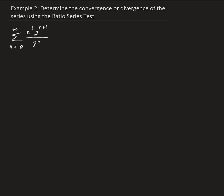If the limit is less than one, that means the series will converge. If it's greater than one, that means the series will diverge. If it's equal to one, then it's inconclusive, and we'll have to use another test to determine the convergence or divergence.